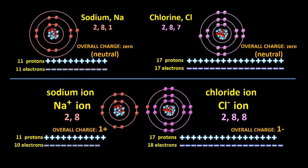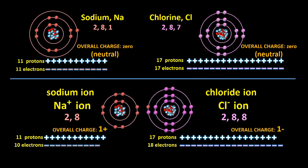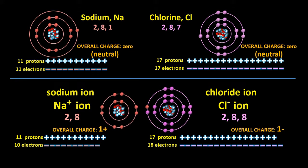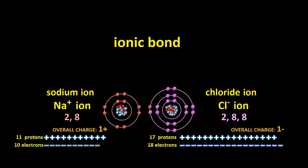Since the two atoms now have opposite charges, they attract one another and form a bond, specifically what's called an ionic bond, since it forms between two ions.